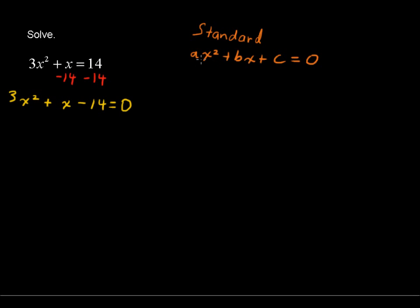Notice this standard form is ax squared. Well, our a then would be equal to 3. And our b, that is the coefficient of x, is 1. If there's nothing there, you can think of it as 1 times x. So b equals 1.